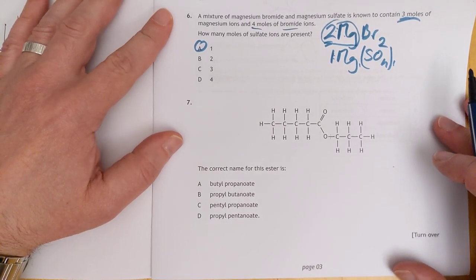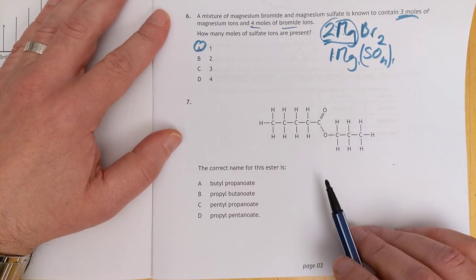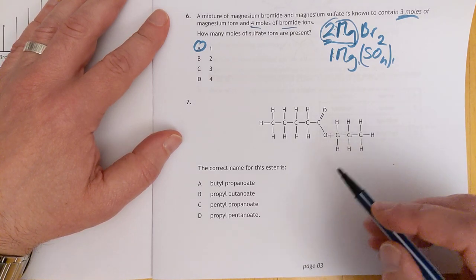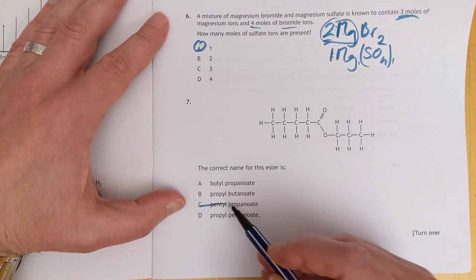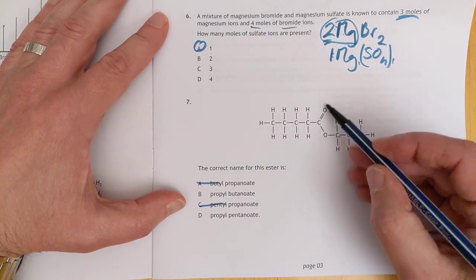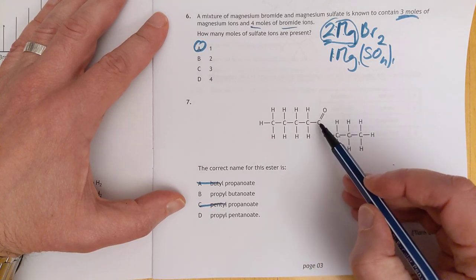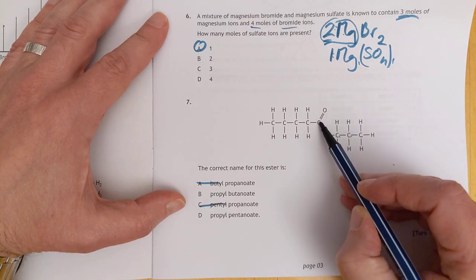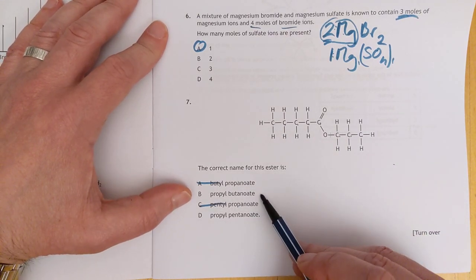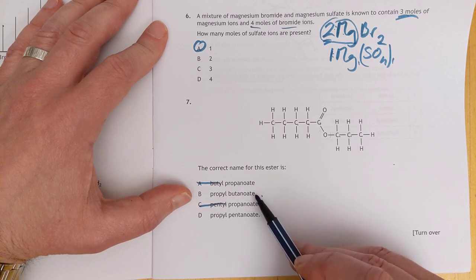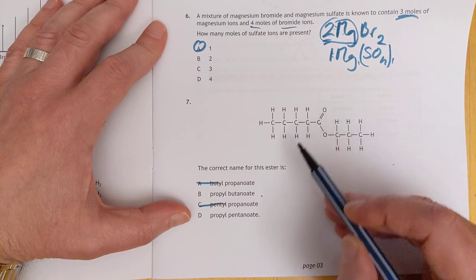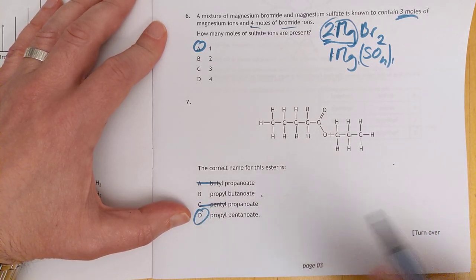Number seven. The correct name for this ester. We've got one, two, three. So that's propyl, which means we can throw that out. The reason I know that's the alcohol is because that was the carboxylic acid. So it's propyl, oh, I nearly forgot to count that carbon. One, two, three, four, five. Propyl, yeah. Look, classic SQA trick. Propyl butanoate is before propyl pentanoate. So if you forget, if you just count the four carbons, you'll go with that one. The answer is D.